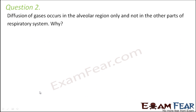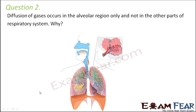Question number two: diffusion of gases occurs in the alveolar region only and not in the other parts of the respiratory system — why? If you talk about the different parts of the respiratory system, the exchange of gases occurs only at the alveoli.